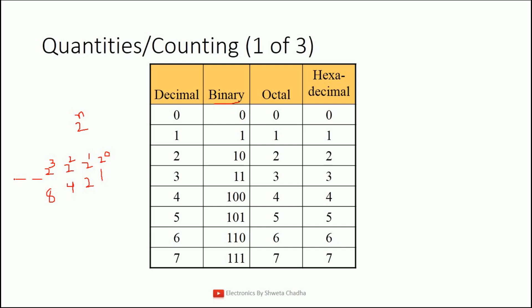So how will you write binary 1? It is 0001 — the front zeros have no value, so the answer is 1. How will you write 2? It is 0010. How will you write 3? We need 2 plus 1 equals 3, so that is 0011. Similarly, for 7: 4 plus 2 is 6, and 6 plus 1 is 7, so the binary equivalent of 7 is 0111.